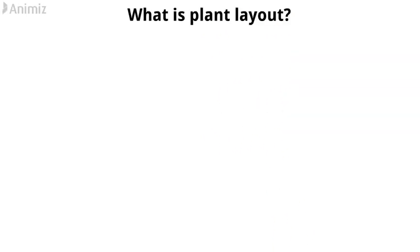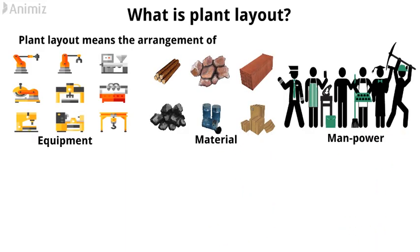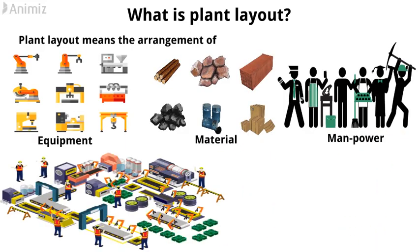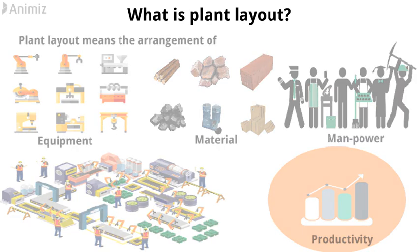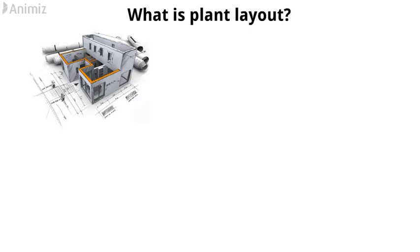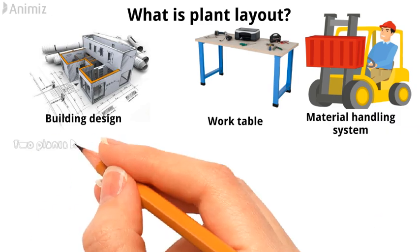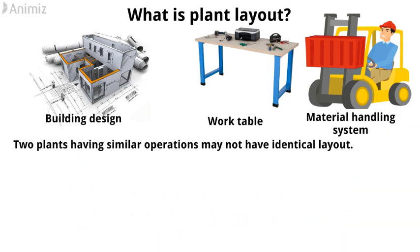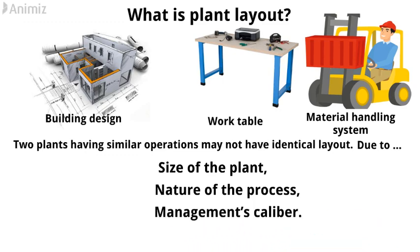What is plant layout? Plant layout means the arrangement of equipment, material, manpower, and other facilities and services of the plant within the selected work area, to achieve the productivity as high as possible. Plant layout starts with building design, and goes up to movement of work tables and material handling systems. Two plants having similar operations may not have identical layout. This may be due to the size of the plant, nature of the process, and management's caliber.